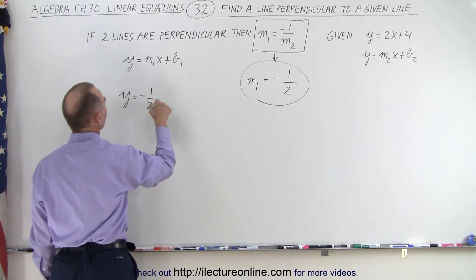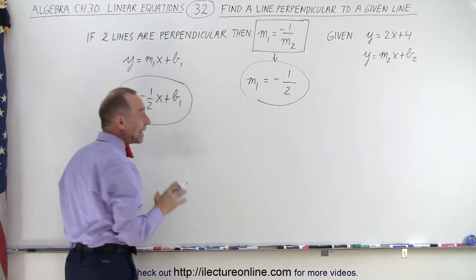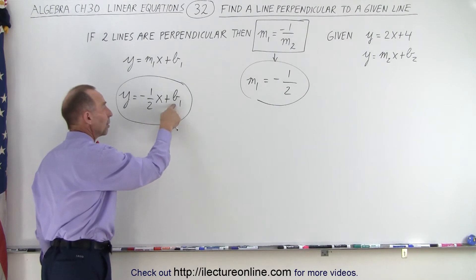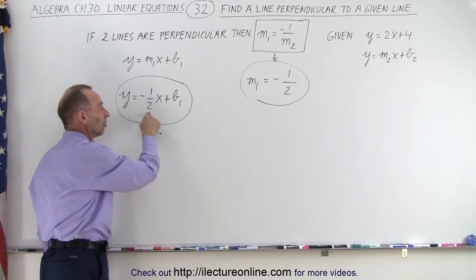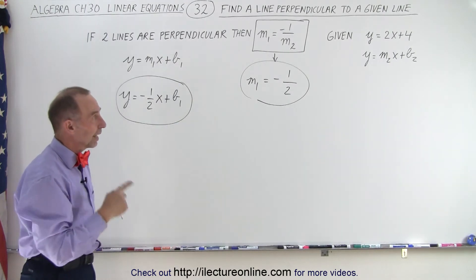So that means that the line we're looking for will have the form y is equal to minus 1 half x plus b1, and now notice b1 can be any number. It doesn't matter because we know that no matter what value we plug in for b1, the slope of this line will always be the negative inverse of the slope of the other line.